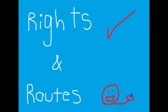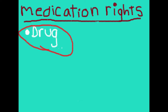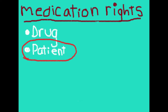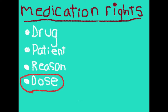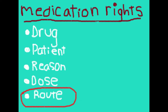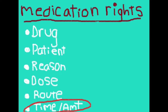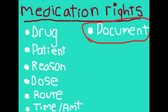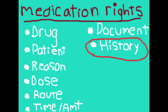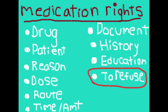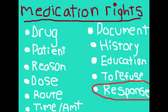For the medication rights, you want to make sure that you have the right drug, patient, reason, dose, route, time and amount, documentation, history, education, right to refuse, and the right response. So we're going to go through what all that means.